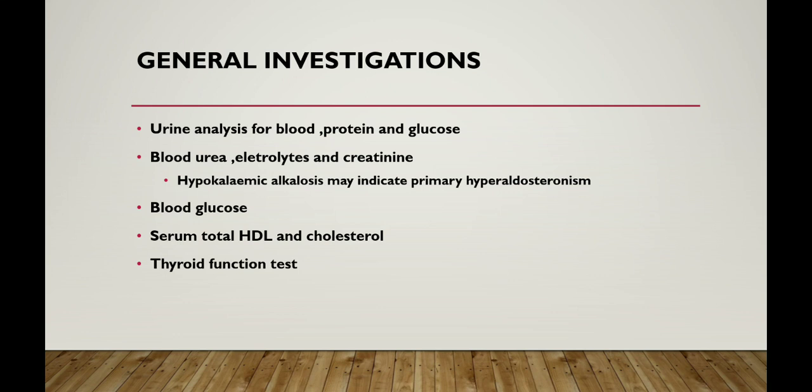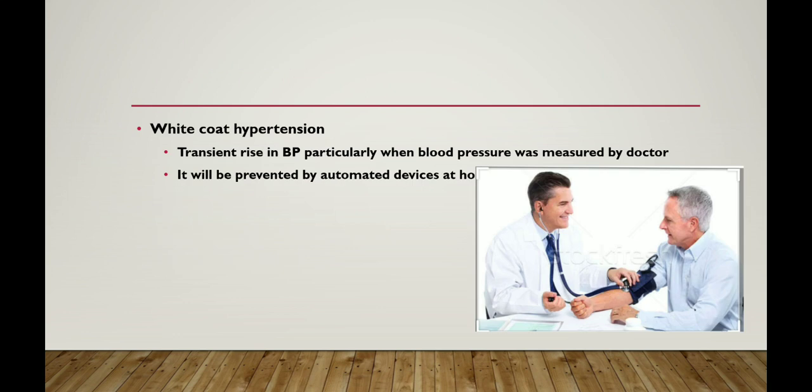Coming to general investigations for hypertension: urine analysis for blood, protein, and glucose; blood urea, electrolytes, and creatinine; hypokalaemic alkalosis may indicate primary hyperaldosteronism; blood glucose; serum total HDL and cholesterol; and thyroid function tests. An important concept is white coat hypertension, which means a transient rise in blood pressure particularly when measured by a doctor. It can be avoided by using automated devices at home.